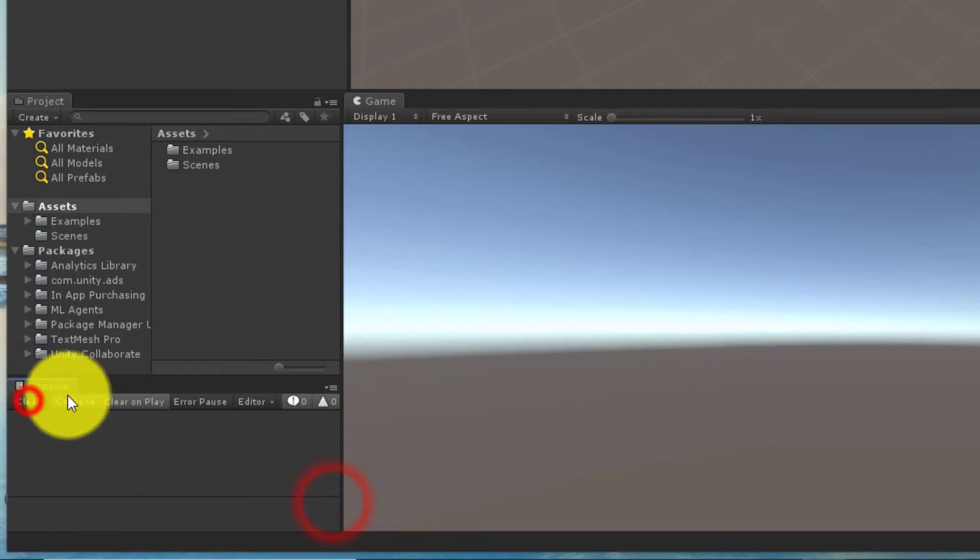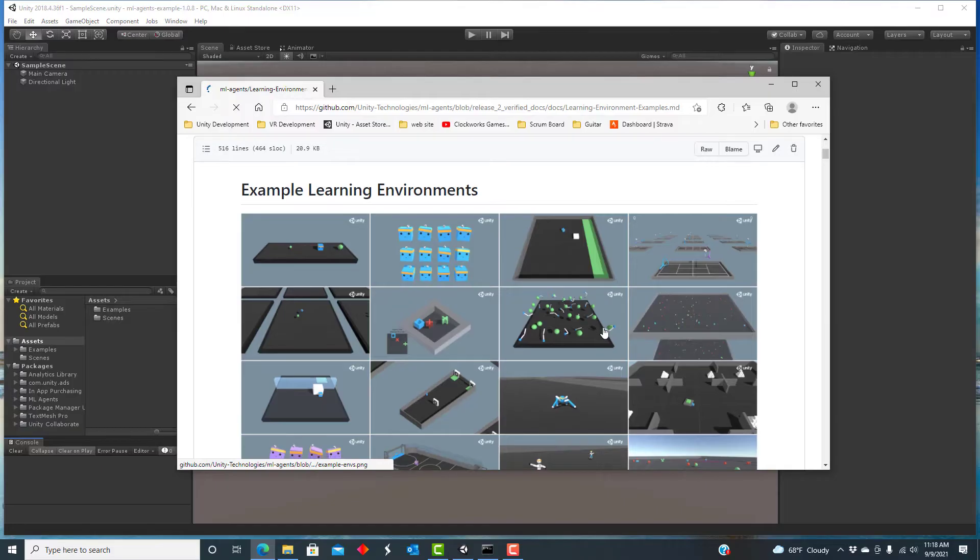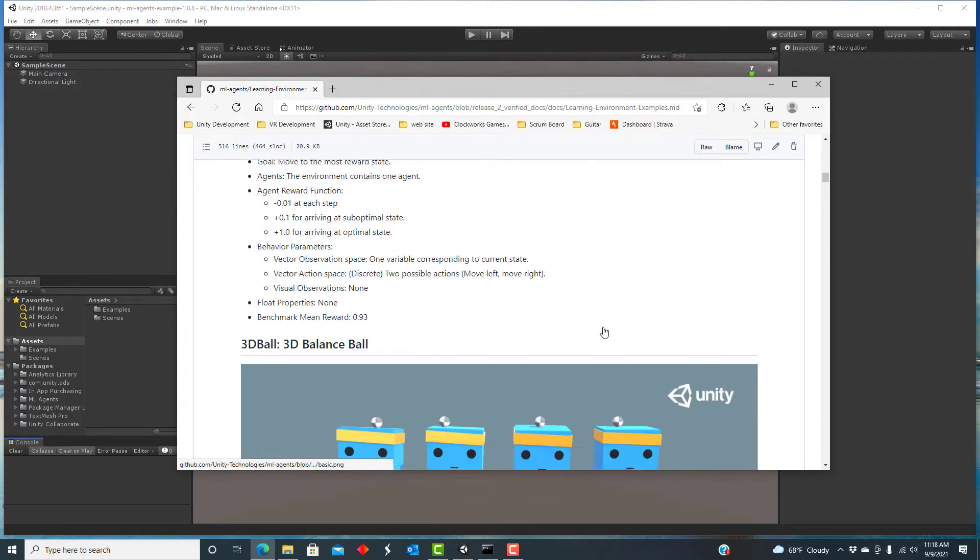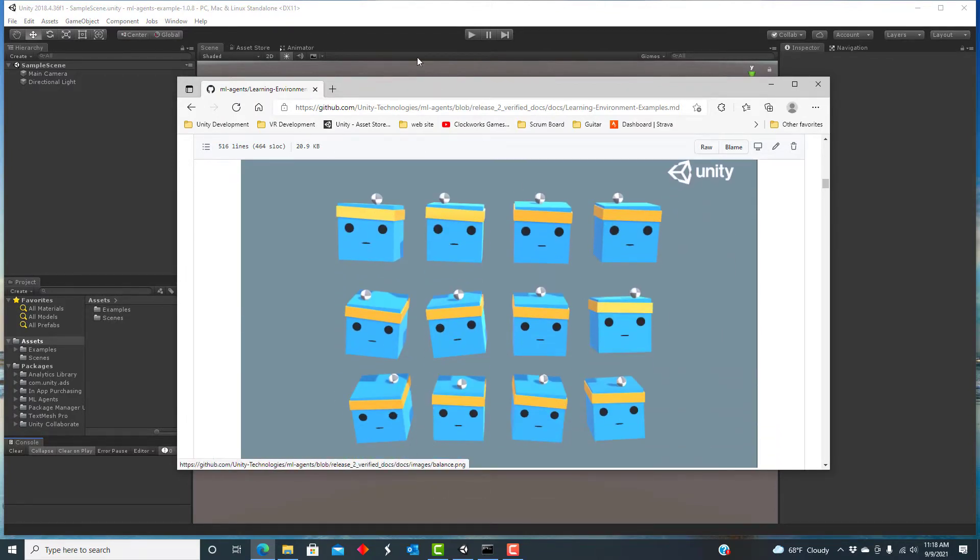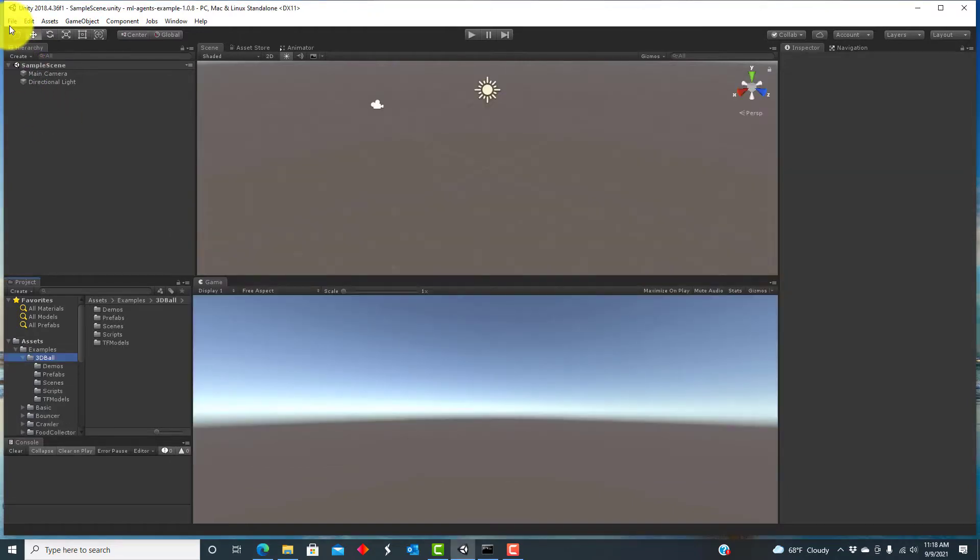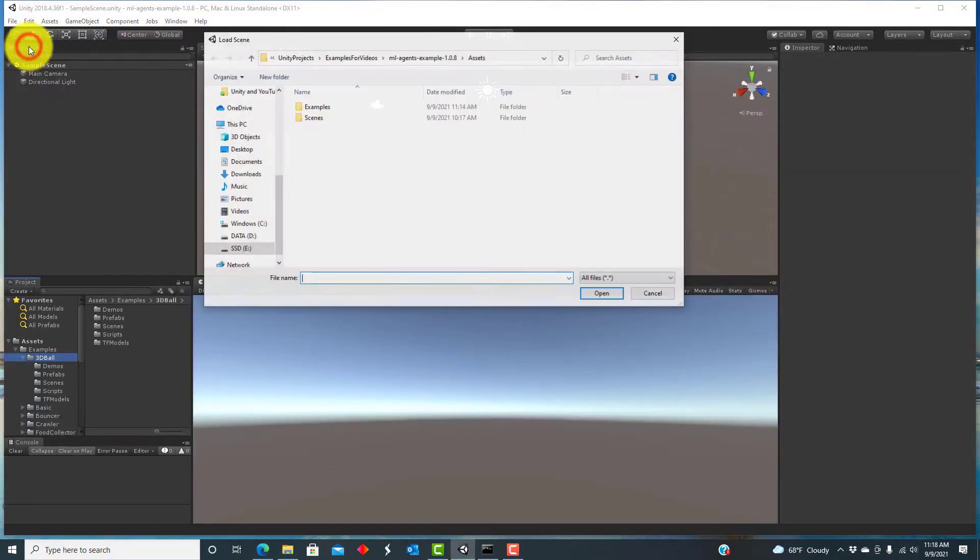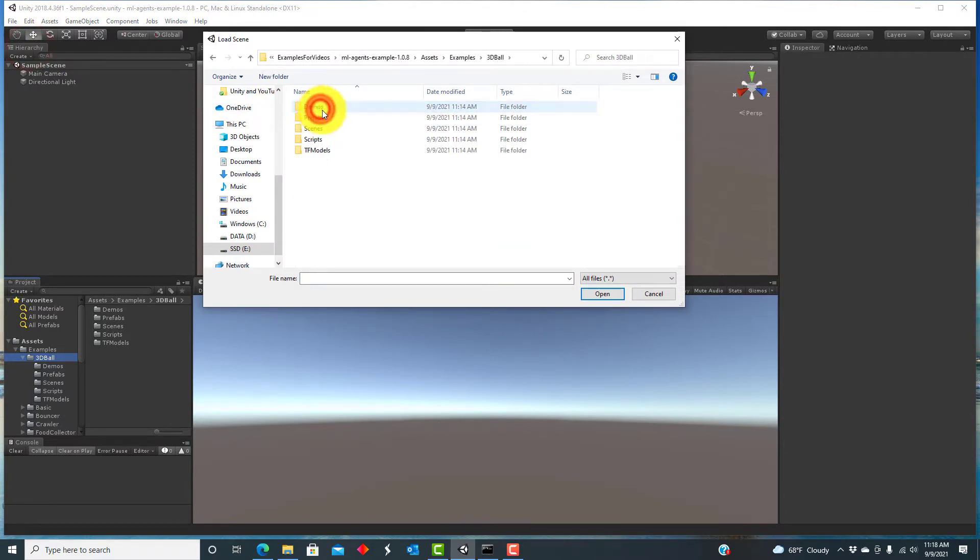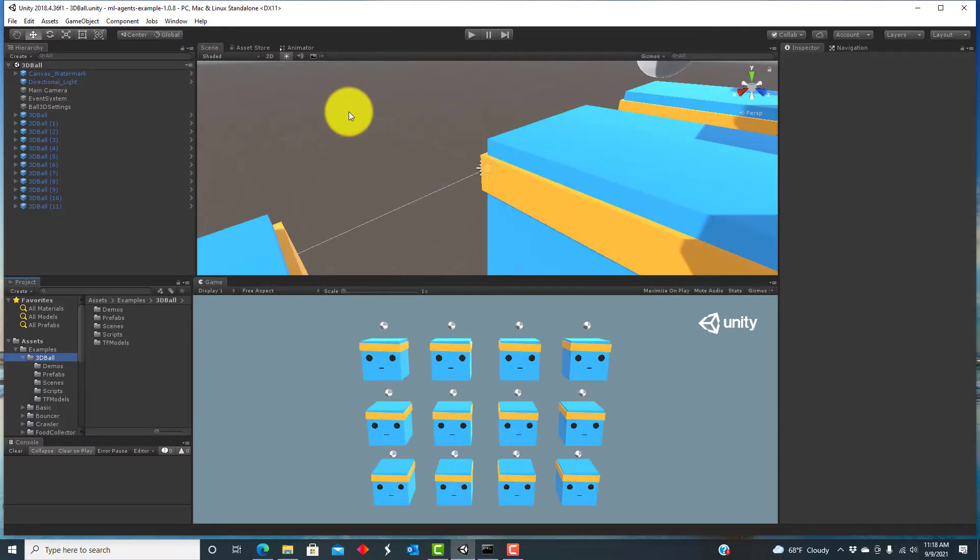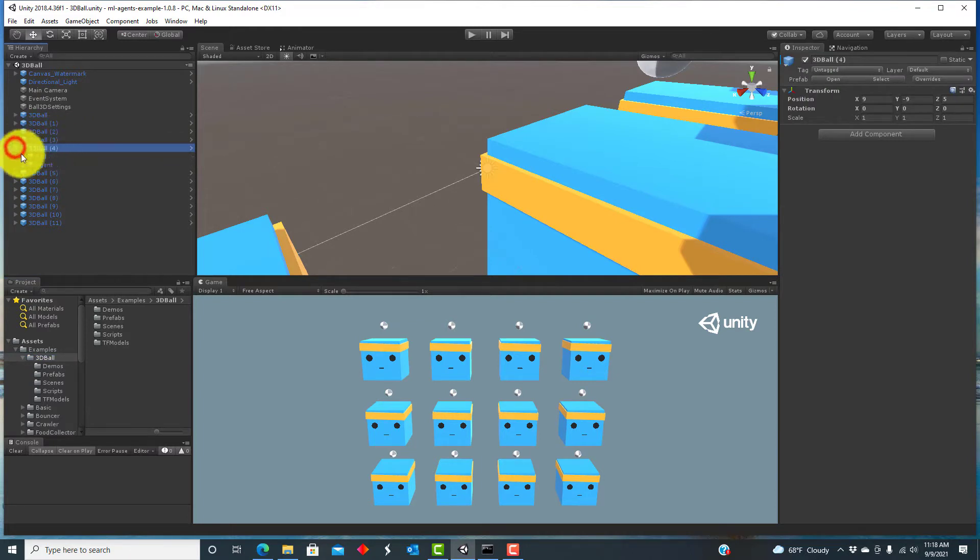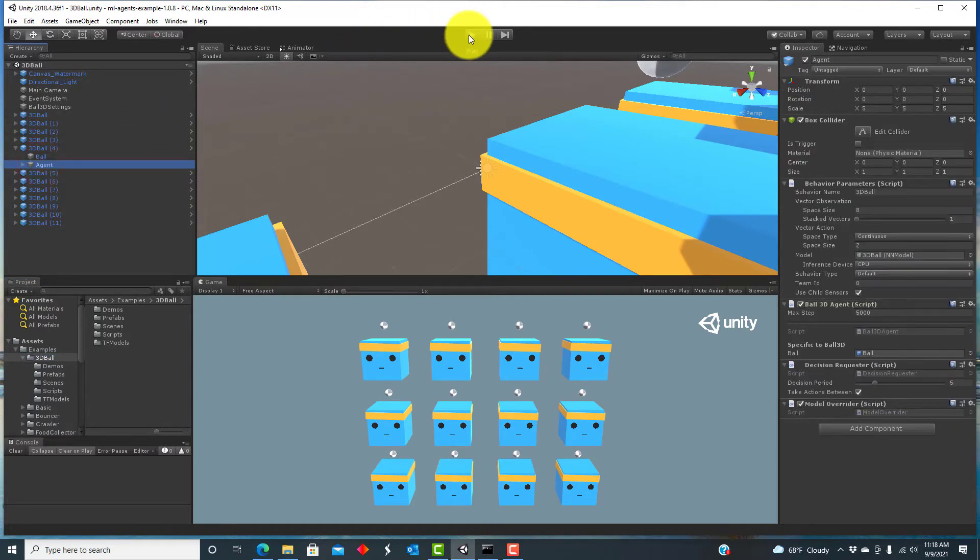So now we have the ML Agents examples in Unity and we can try running them. Let's take a look at what is probably the simplest example, 3D ball. We see we have these cube guys who balance balls on their head. The example already has a trained neural net and is ready to run. If we click Run, we see the cube guys are very good at balancing the balls on their head. This simulation has physics, including gravity, and the balls have mass. If the cube guys were less good at balancing the balls, the balls would easily just fall.